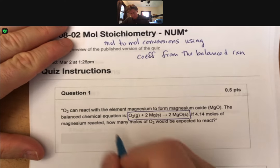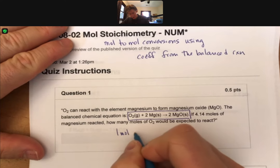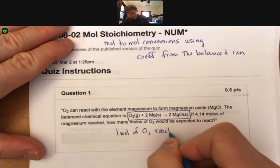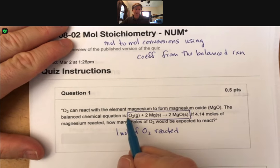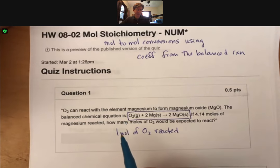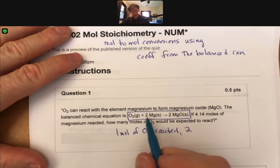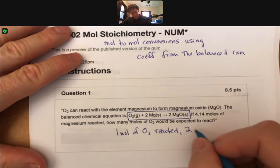That says that for every one mole of O2 reacted, because even though there's not a one there it's implied, two moles of magnesium will react.